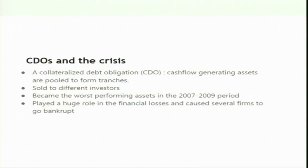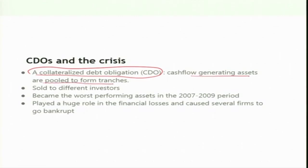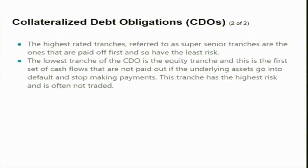The higher-risk component of MBS — where the cash flow is low — was further developed into a new product called a collateralized debt obligation, or CDO. The cash flows generated from these assets were pooled to form new structured products, sold again to different investors. Let us now look at what a collateralized debt obligation is and how it was developed.